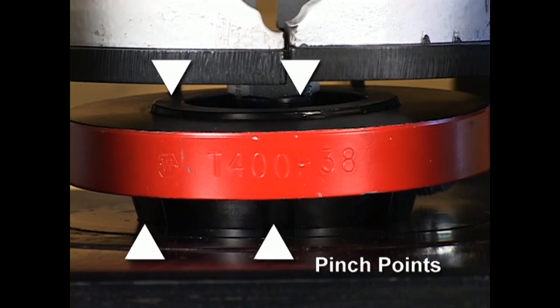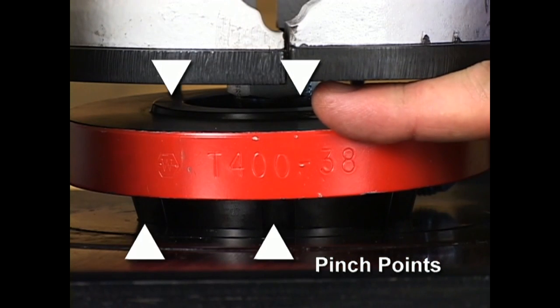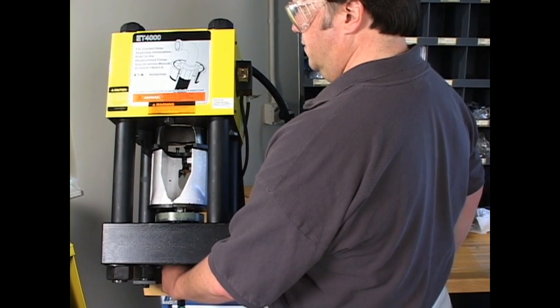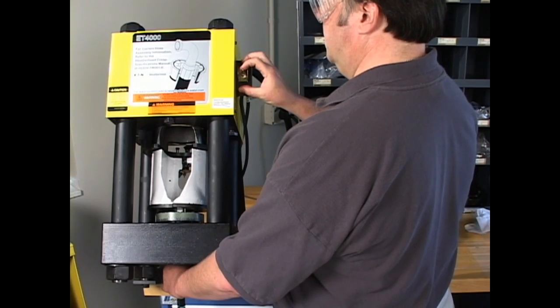All machines have certain pinch points, particularly the press, the pusher and of course the collets where the actual crimp is performed. Keep one hand on the hose being crimped and one hand on the handle or the toggle switch away from these pinch points.